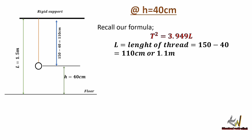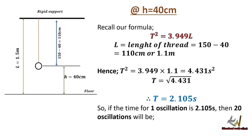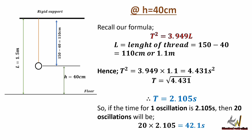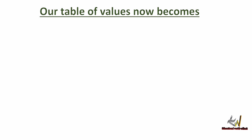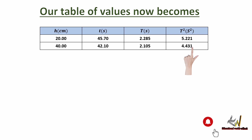Recalling our formula T² = 3.949L, substituting L = 1.1 meters gives T² = 3.949 × 1.1 = 4.431 seconds squared. The period is the square root of 4.431 = 2.105 seconds. So 20 oscillations take 20 × 2.105 = 42.1 seconds. Table entry: h = 40 cm, time for 20 oscillations = 42.1 seconds, period = 2.105 seconds, T² = 4.431 seconds squared.